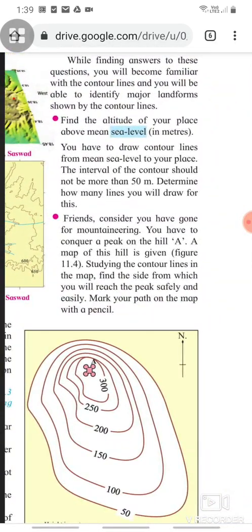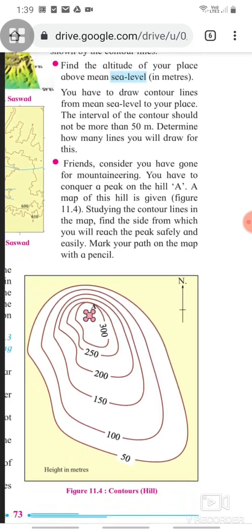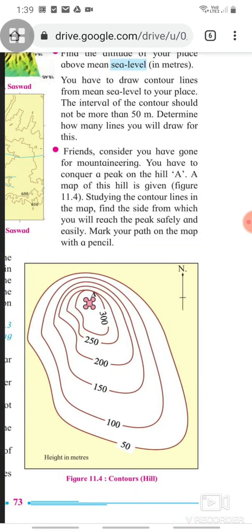While finding answers to these questions, you will become familiar with the contour lines and you will be able to identify major landforms shown by contour lines. Find the altitude of your place above main sea level in meters. You have to draw contour lines from main sea level to your place. The interval of the contour should not be more than 50 meters and determine how many lines you will draw for this.